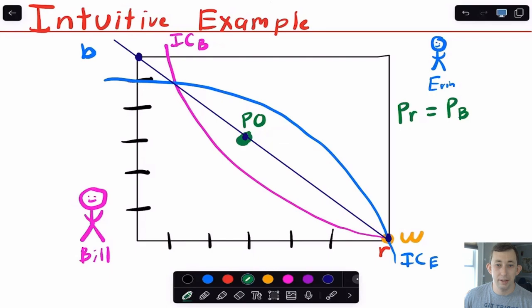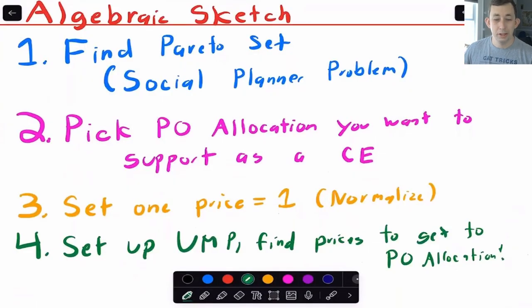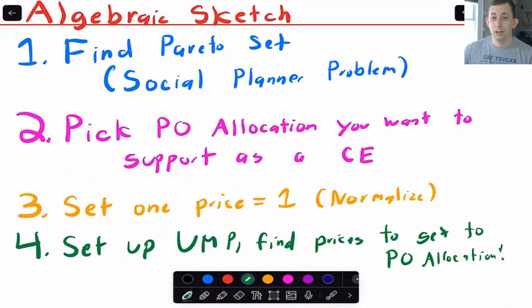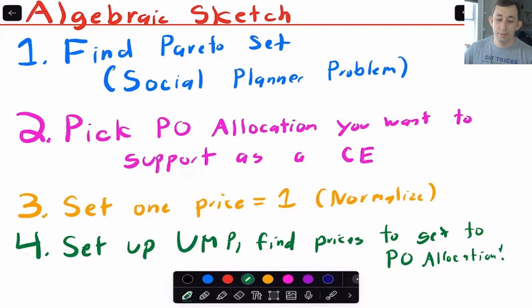Because the First Fundamental Welfare Theorem holds, we know the competitive equilibrium is going to be Pareto optimal. The way we found it is by working backwards: given the Pareto optimal allocation we want, what prices are required to support it as a competitive equilibrium? We did this graphically, but you can also do it algebraically. The general approach is: find the Pareto set by solving the social planner problem, pick the Pareto optimal allocation you want to support, back out the prices needed to achieve it, and then set up the utility maximization problem.